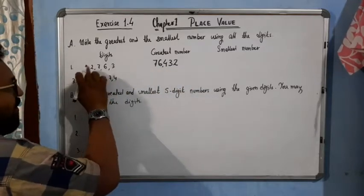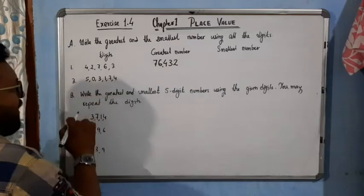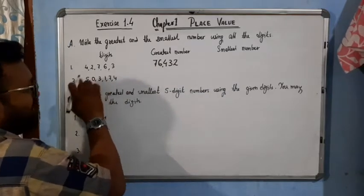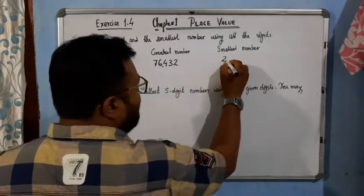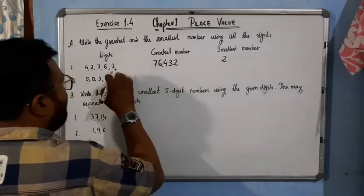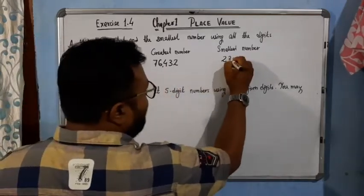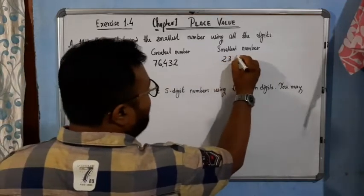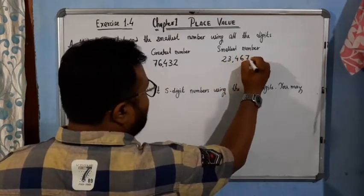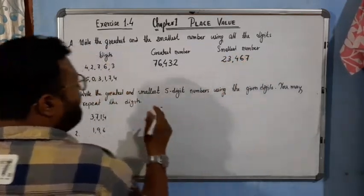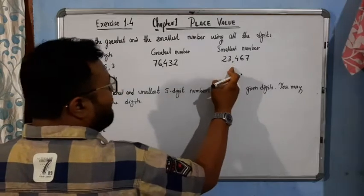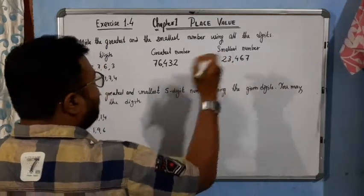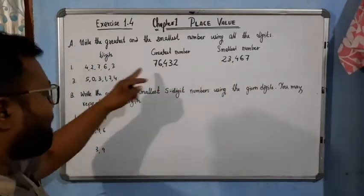Now we need to find the smallest number. The smallest digit here is 2, so we write 2 first, then 3, then 4, then 6, then 7. So the smallest number is 23,467. I hope you have understood this one.